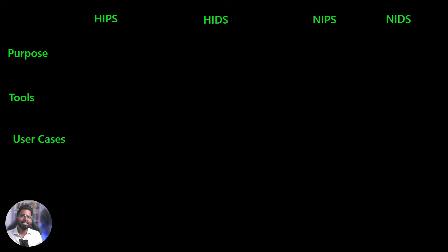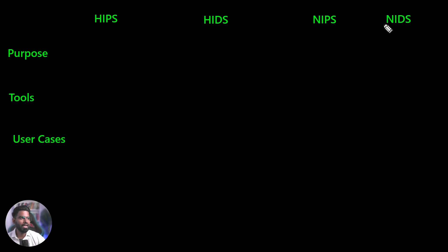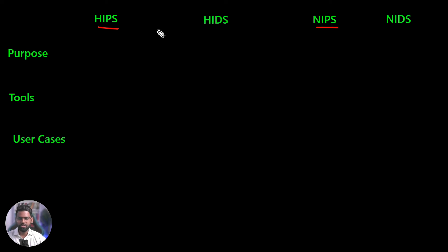Now let's differentiate everything: HIPS, HIDS, NIPS, and NIDS. As you can see, HIPS and NIPS are part of IPS — both have prevention techniques. HIDS and NIDS are part of IDS — they can only detect and alert the admin.